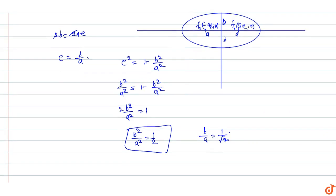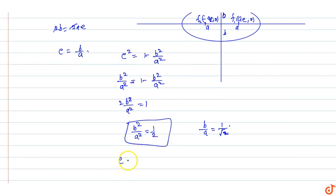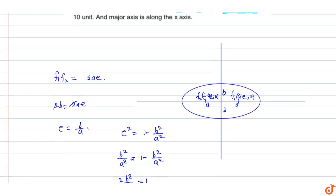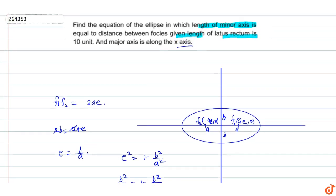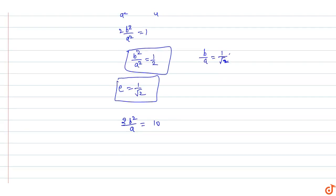The eccentricity e equals 1/√2, and b/a = 1/√2. The major axis is along the x-axis. Now we use the given condition: the length of the latus rectum is 10. The formula for the length of the latus rectum is 2b²/a = 10, which means b²/a = 5.